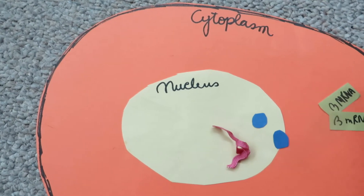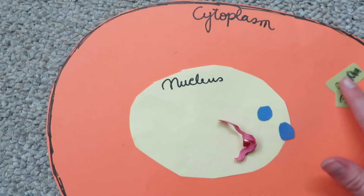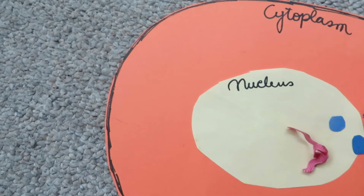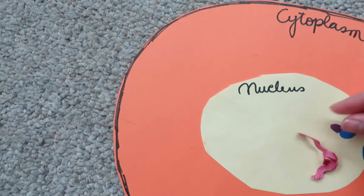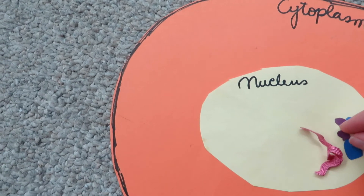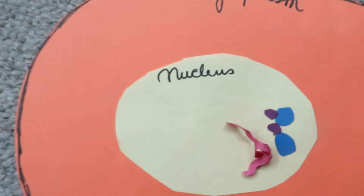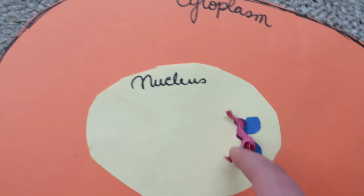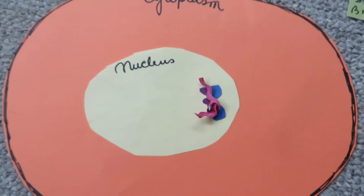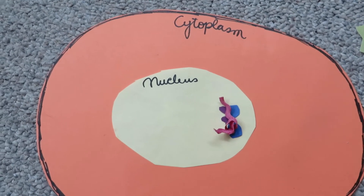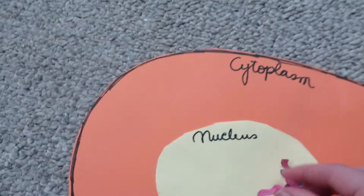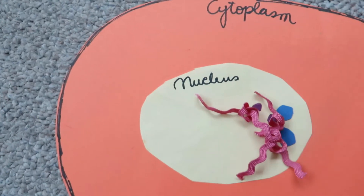Once that is done, the cell releases beta mRNA back into the cytoplasm, and it does the same thing — it swaps it for beta proteins. Then the alpha and beta proteins enter the nucleus.